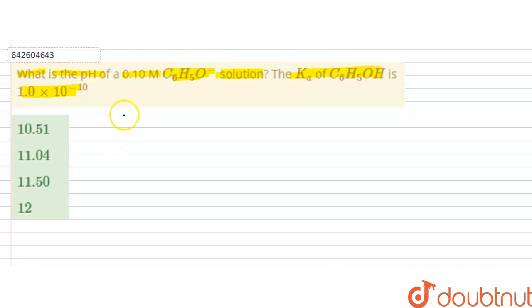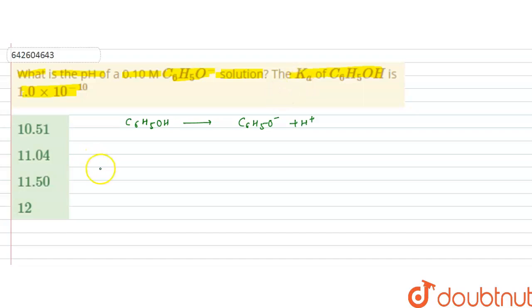Phenol, that is C₆H₅OH, dissociates to give C₆H₅O⁻ and H⁺. It is an acid and its dissociation constant Ka is given as 1×10⁻¹⁰. We have to first calculate Kb.